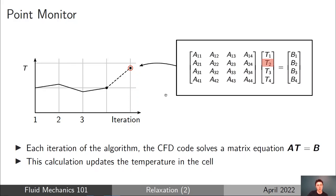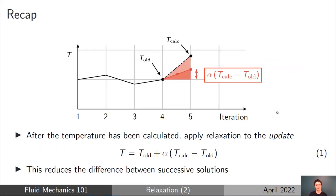During each iteration, we solve the matrix equation — shown in the box — and the solution of that matrix equation, the temperature vector T1, T2, T3, and T4, gives the temperature at the centroids of each of those cells in the bar for the next iteration. When we apply explicit relaxation, we calculate the update to the solution that the calculated value of T2 (T calc) would have given us, and then apply some fraction of that update.